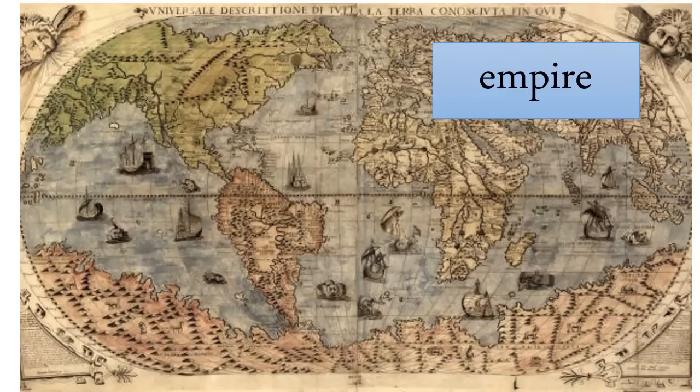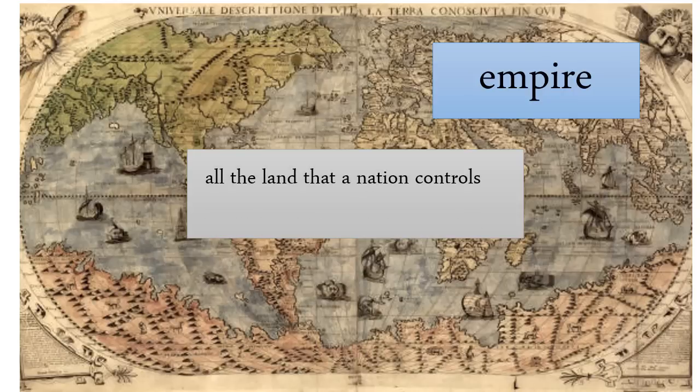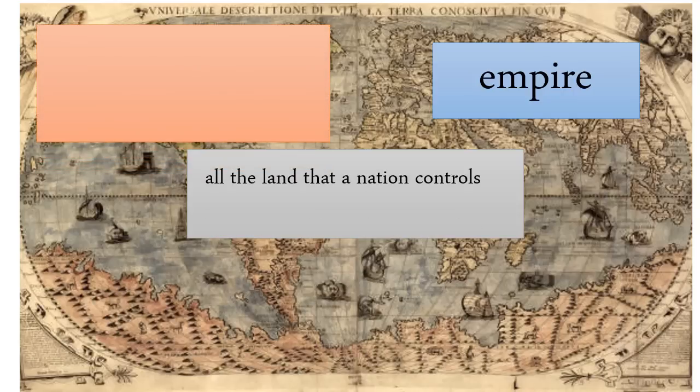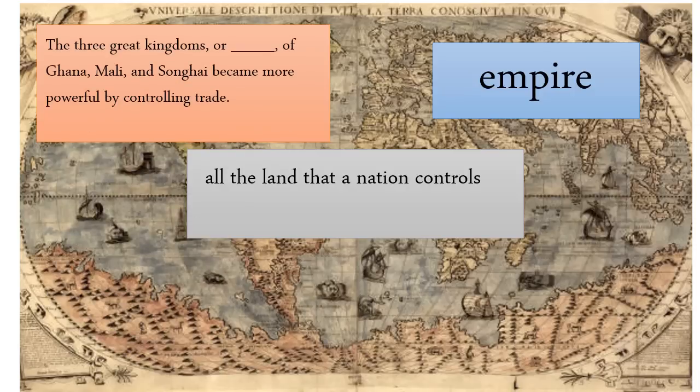Your next word is empire. An empire is all the land that a nation controls. An example sentence from our unit would be, the three great kingdoms or empires of Ghana, Mali and Songhai became more powerful by controlling trade.